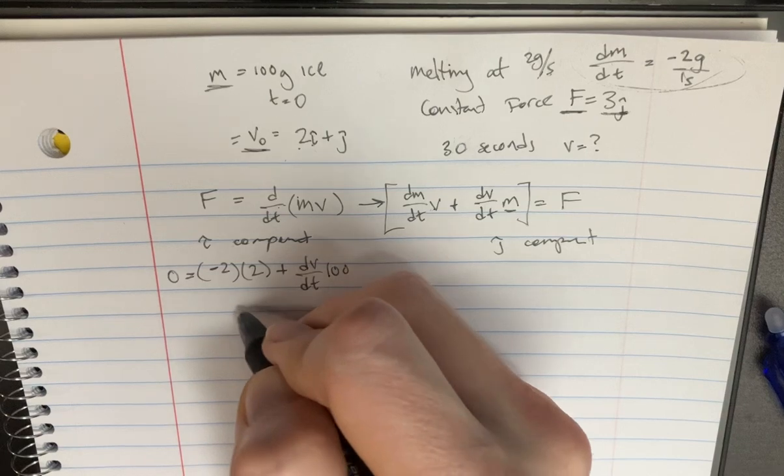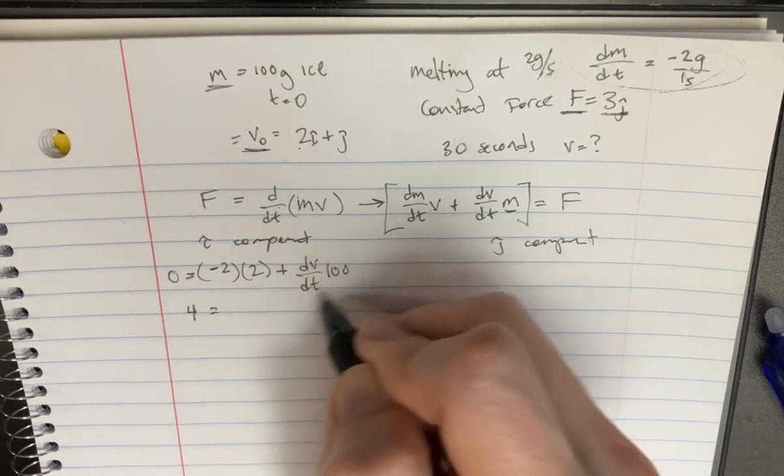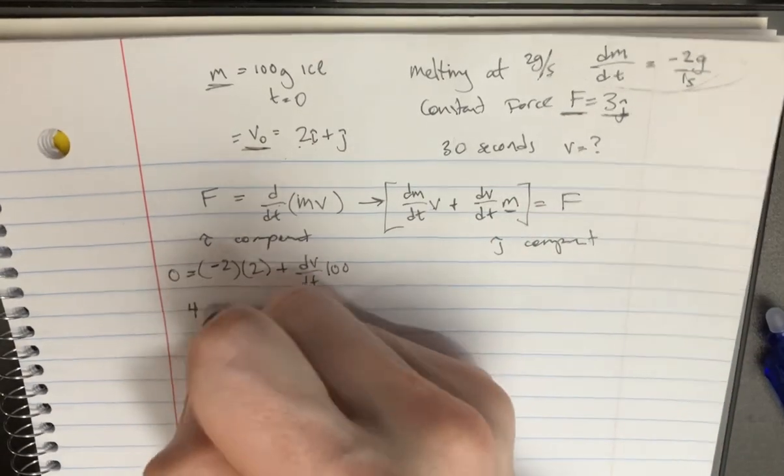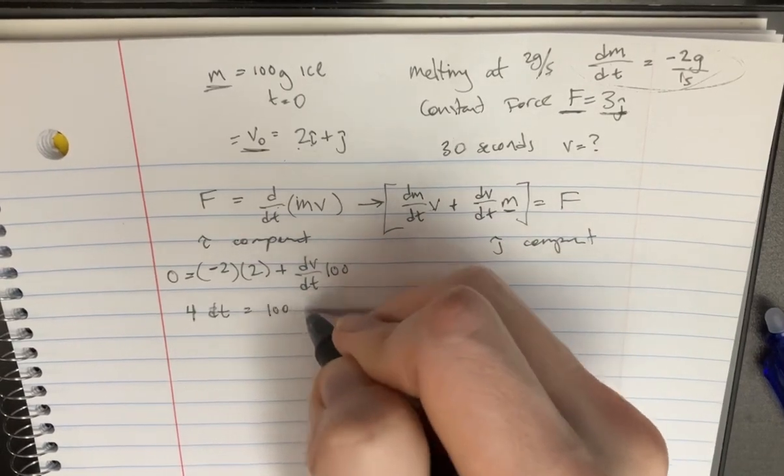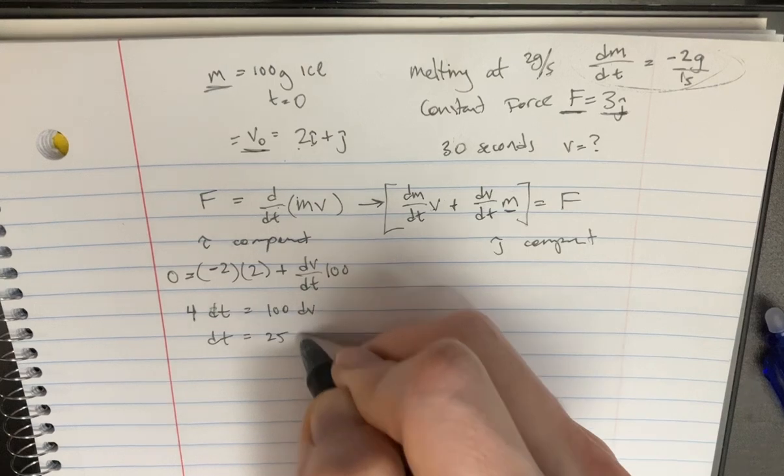Okay great. So now we can actually solve for this. We're going to get negative 4. I'll put that on the other side. So we've got 4 equals. And we can move also the dt on the other side. And that's going to equal to 100 dv. So in the end, dt is equal to 25 dv.